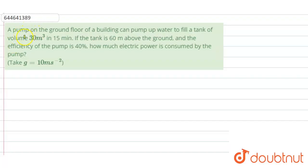The given problem says that a pump on the ground floor of a building can pump up water to fill a tank of volume 30 meter cube in 15 minutes. Now if the tank is 60 meter above the ground, so there is a pump and it is pumping water to a tank and the tank is placed at the height of 60 meter above the ground.